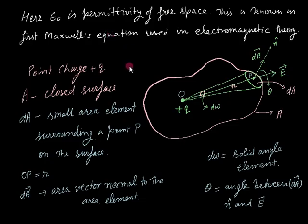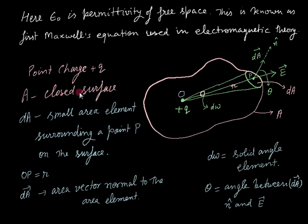To draw this particular law — known as Gauss's law in electrostatics — we consider a point charge plus Q. This charge is enclosed in a random closed surface A. A small area element surrounds a point P on the surface, and the direction is given by the unit vector n, which is perpendicular to the plane of the area element dA.